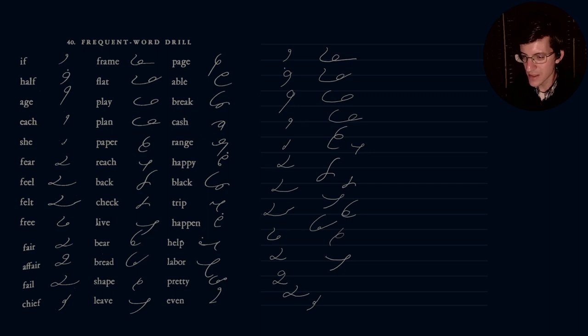We have the word page. So page. Able. Break. That should be just a little bit shorter. Cash. Range. Happy. Black. Trip.